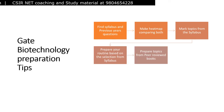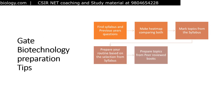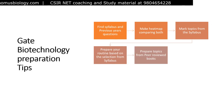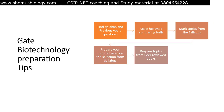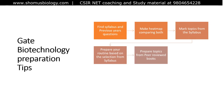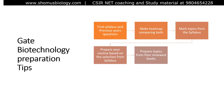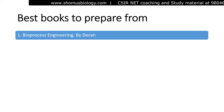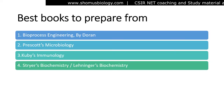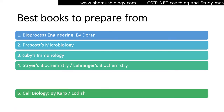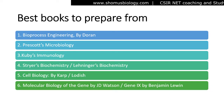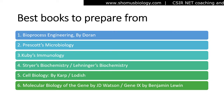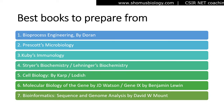After setting your routine, start preparing from peer-reviewed books. The list includes: Bioprocess Engineering by Doran, Prescott's Microbiology, Kuby's Immunology, Stryer's Biochemistry, Lehninger's Biochemistry, Cell Biology by Karp, Molecular Biology by Watson, or the Genes series (Genes 8 or 9), and Bioinformatics: Sequence and Genome Analysis by David W. Mount. These are very good books for your preparation.